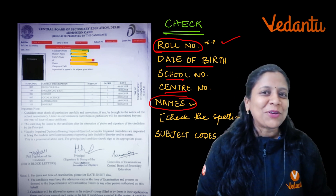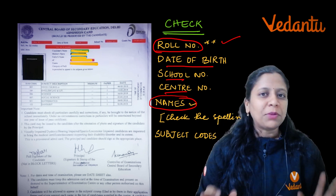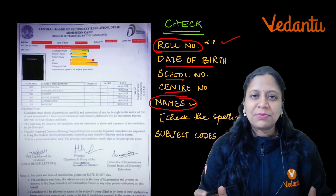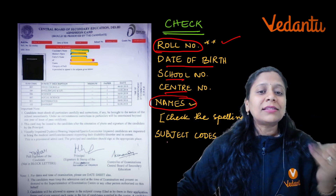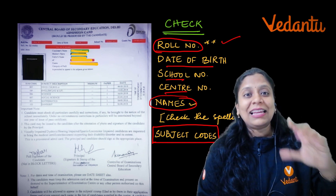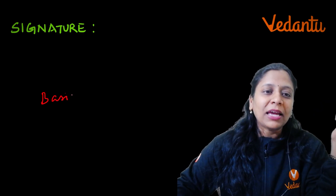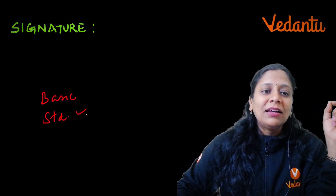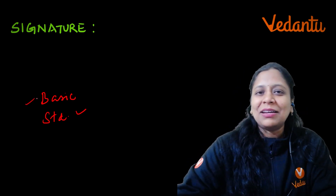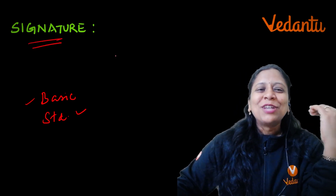Because this is the first board exam you are going to write, any kind of mistake must be reported immediately so it can be corrected. Subject codes are also very important — check that the subject you applied for is correctly printed. For example, if you chose Basic Math but Standard Math is printed on the admit card, inform your school right away.